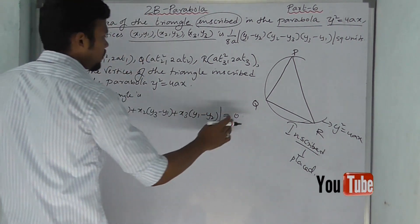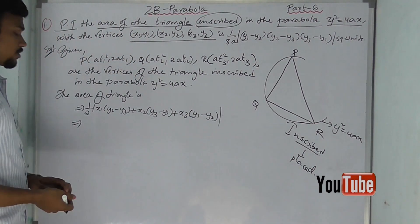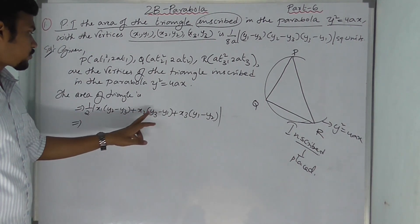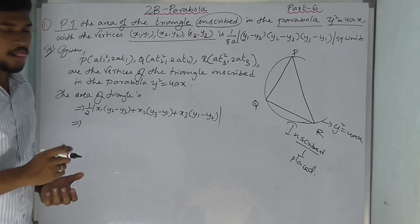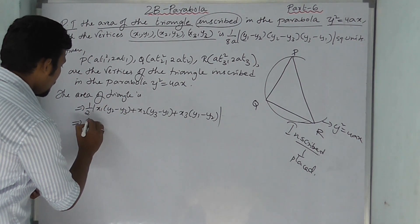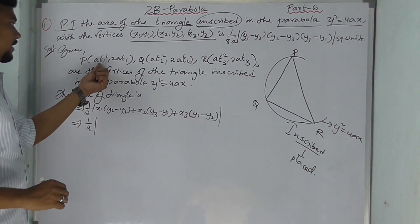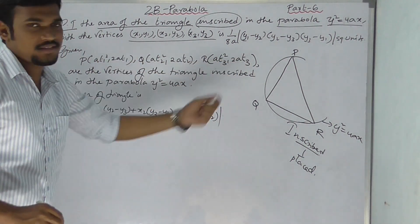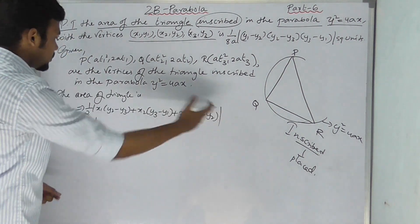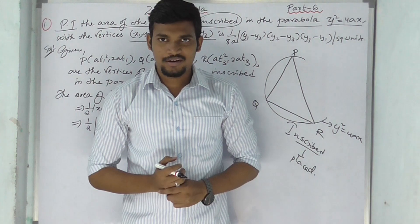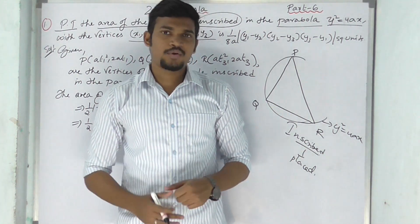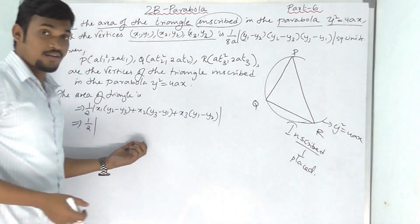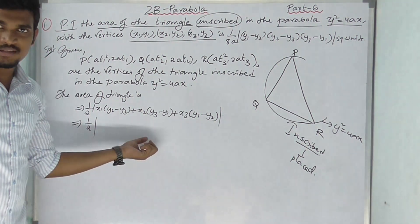So area = ½ |x1(y2 − y3) + x2(y3 − y1) + x3(y1 − y2)|. This formula is from coordinate geometry, already known from 10th class and also used in intermediate level locus problems. You have to use this formula.